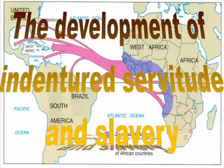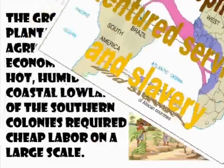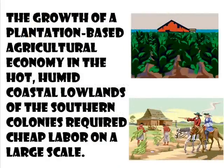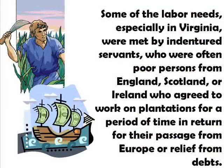The development of indentured servitude and slavery: The growth of a plantation-based agricultural economy in the hot, humid coastal lowlands of the southern colonies required cheap labor on a large scale. Some of the labor needs, especially in Virginia, were met by indentured servants, who were often poor persons from England, Scotland, or Ireland, who agreed to work on plantations for a period of time in return for their passage from Europe or relief from debts.